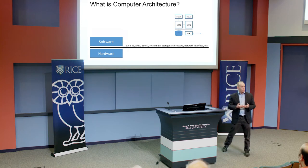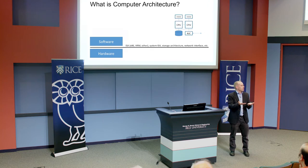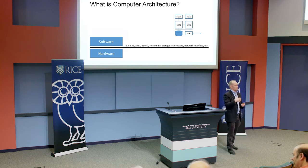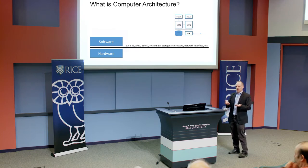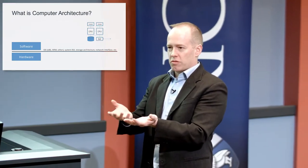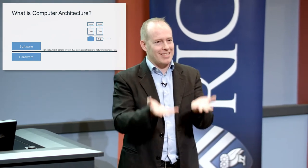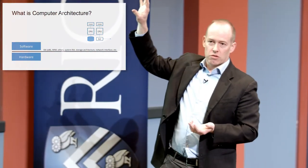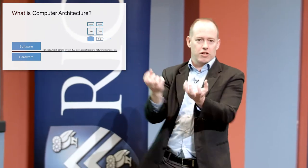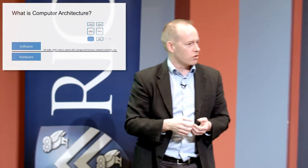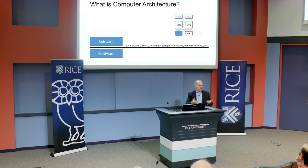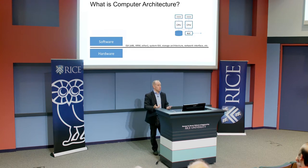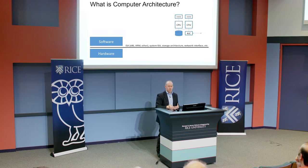Traditionally, for decades, this was actually a pretty stable thing. We talked about instruction set architectures — Intel's x86, ARM being a RISC instruction set — and then the system architecture: the interrupt model, storage architecture, networking architecture. People talked about the instruction set because that's the software interface down to the hardware. I show a conventional server design — two CPU sockets, a disk, some processing, memory, networking, and storage. This model was very stable for a long time. And in PCs, people started putting in GPUs for graphics, so it got a little richer, but it's been pretty stable.